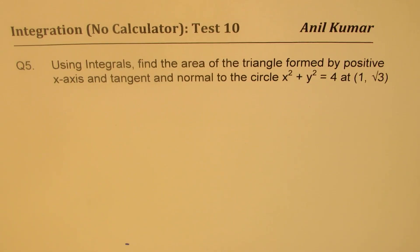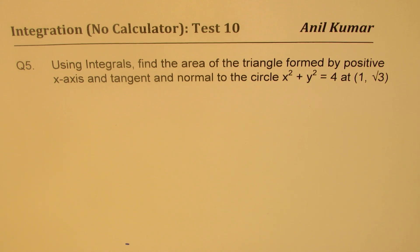Here is another test question on integrals to find the area defined by the intersection of a few lines or curves. Question number 5 is: using integrals, find the area of the triangle formed by the positive x-axis and the tangent and normal to the circle x² + y² = 4 at the point (1, √3). You can always pause the video and answer the question.